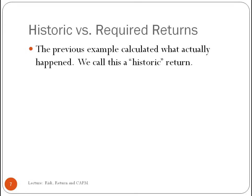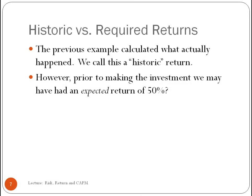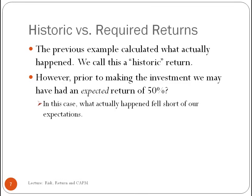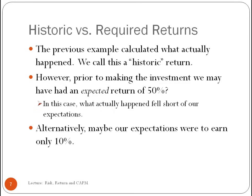The previous example calculated a historic return — what actually happened. However, prior to making the investment, we might have expected a 50% return, in which case we fell short. Alternatively, if we only expected 10%, we exceeded expectations. This distinction between expected and actual returns gives us a first hint of how risk relates to measuring up to our expectations.